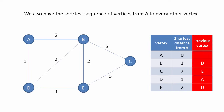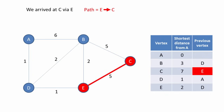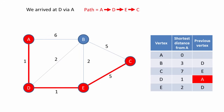We also have the shortest sequence of vertices from A to every other vertex — in other words, the shortest path. For example, to get from A to C, notice that we arrived at C via E, as shown in the previous vertex column. When we examine the information for E, we can see that we arrived at E via D. And when we examine the information for D, we can see that we arrived at D via A. So the previous vertex column gives us the shortest path from A to every other vertex.